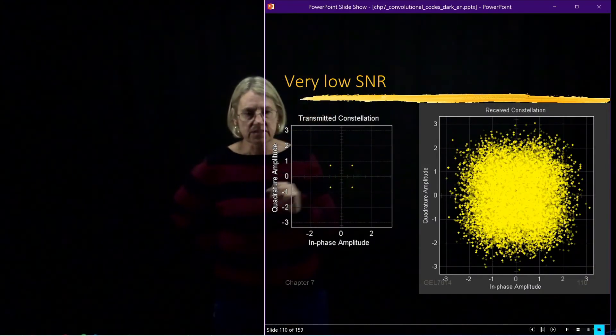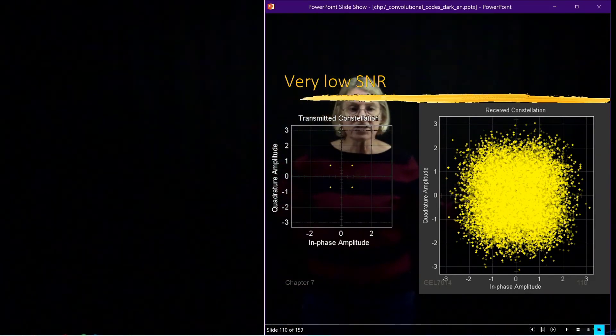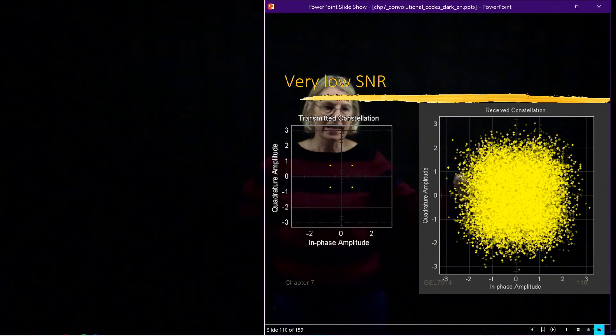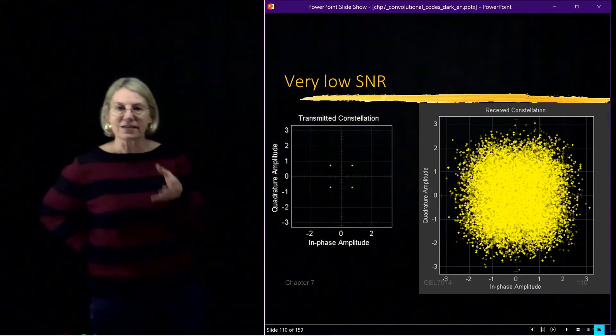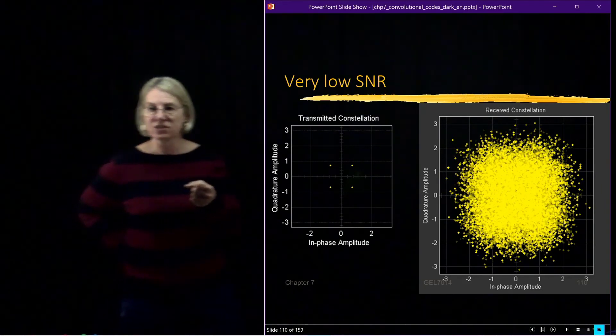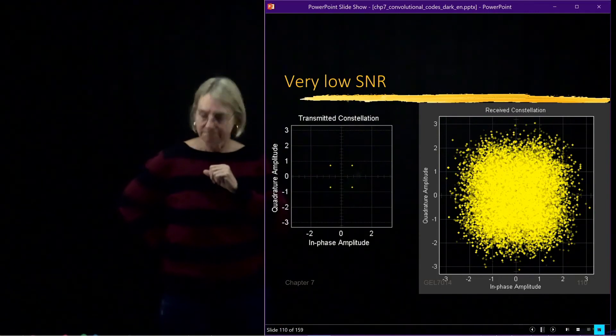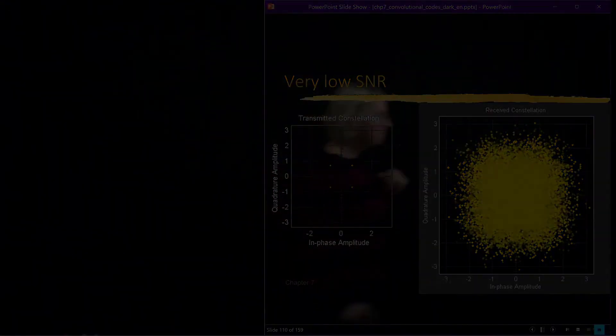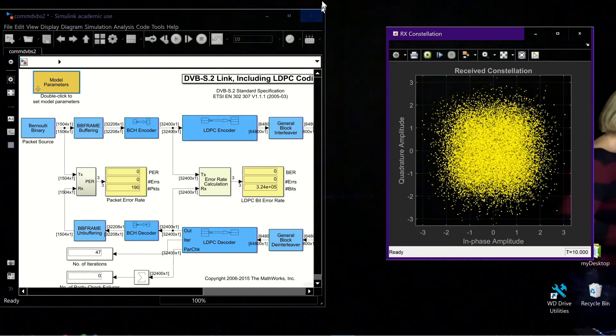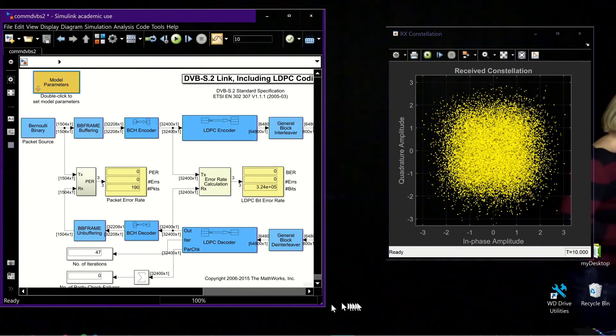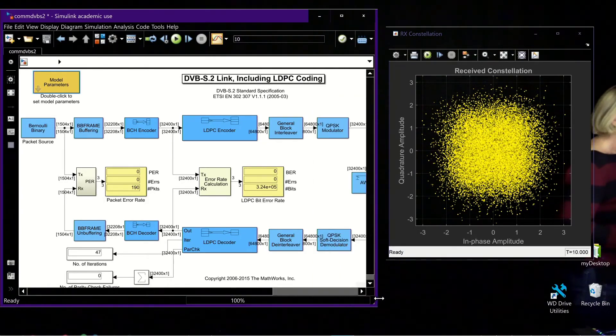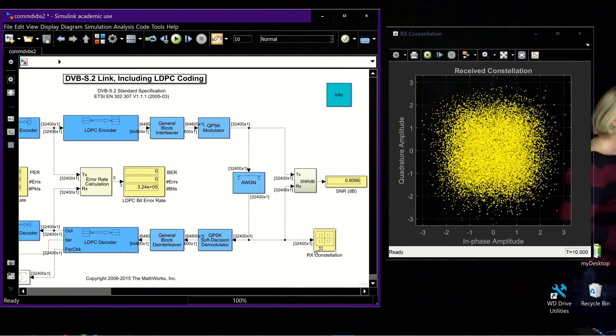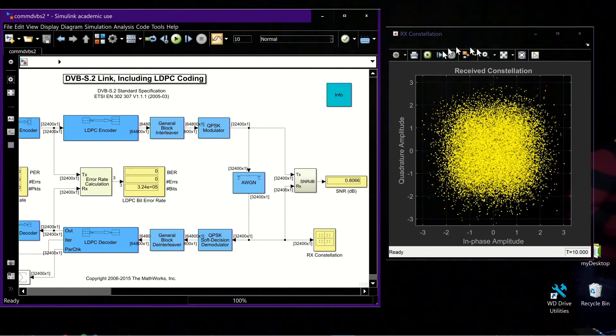Remember this is the four points that are transmitted. When I look at the received constellation, I'm going to see a cloud, which is huge. I can't see the four points at the endpoints because I'm operating at a signal to noise ratio where the noise is on the same order of magnitude as the signal power itself. Here on the left, you'll see that I have the Simulink simulator open. I have the constellation where I'm going to be displaying it here on the right for you.